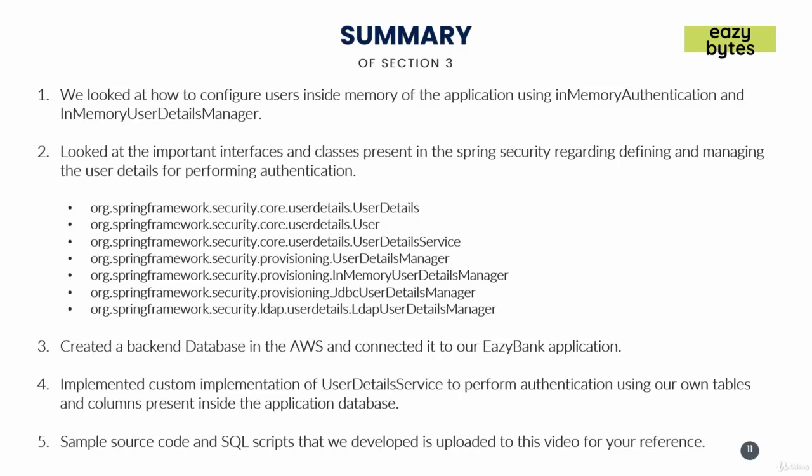After that, we looked at the user contract and schema maintained by Spring Security by understanding all the important interfaces and classes revolving around it. The very first interface we looked at was UserDetails, which is the contract or blueprint of the user that Spring Security wants us to maintain. We also looked at a sample implementation provided by the Spring Security framework itself, which is the User class.